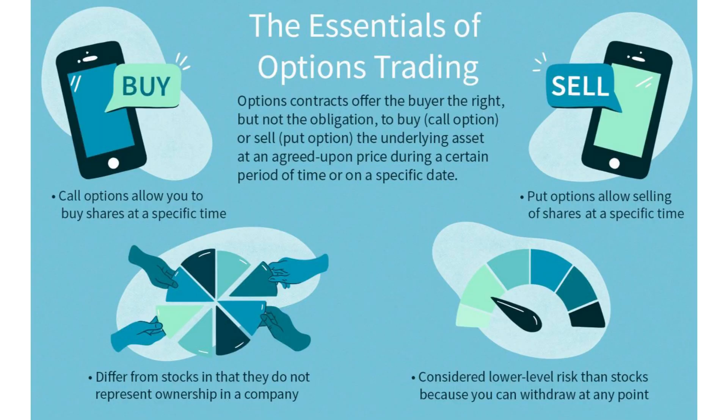Options trading — what is it? It allows investors to speculate on the future price of a stock, commodity, or other asset. To trade options, you must first open an options trading account with a broker. Once your account is open, you can buy and sell options through the broker's trading platform. You'll need to get permission to trade options, and they may ask specific questions to ensure you understand what you're doing before giving you the green light.